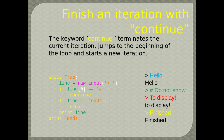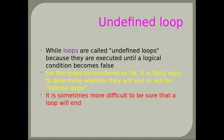Finish an iteration with continue: the keyword continue terminates the current iteration, jumps to the beginning of the loop and starts a new iteration. In this example, when the first letter of the user input is the hash sign, the program skips over. Undefined loops: while loops are called undefined loops because they are executed until the logical condition becomes false. It is sometimes more difficult to be sure that a while loop will end.